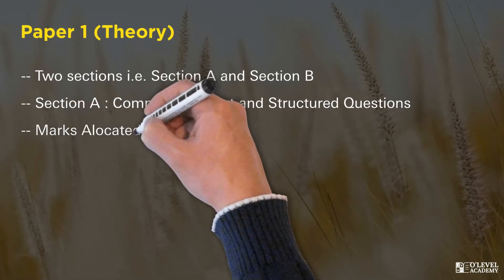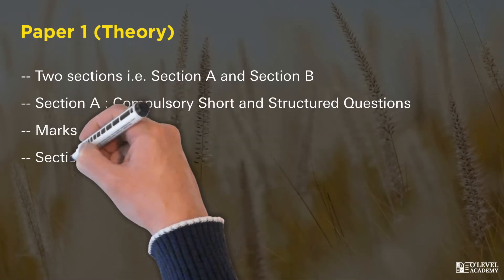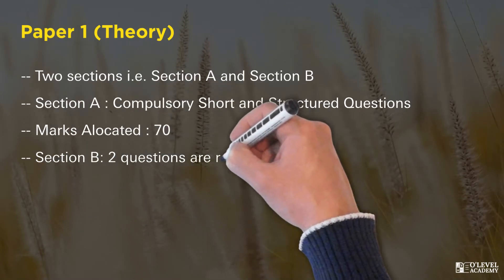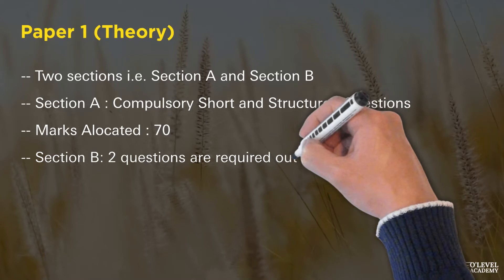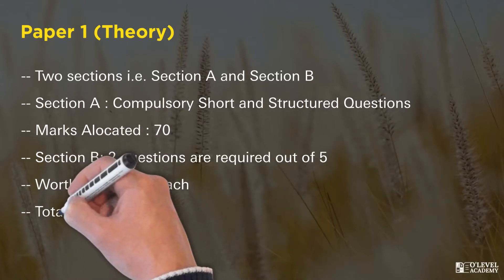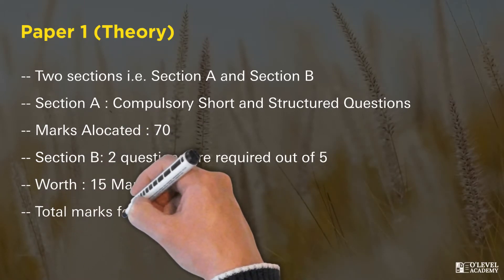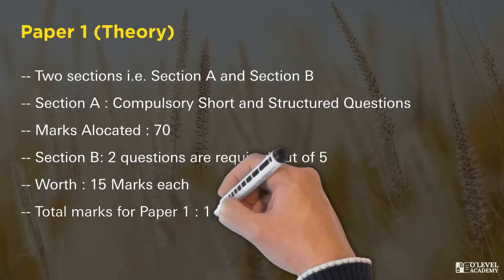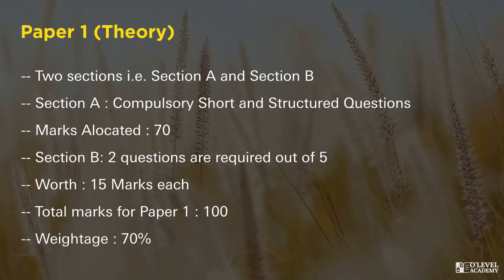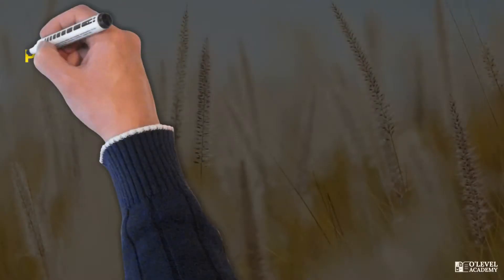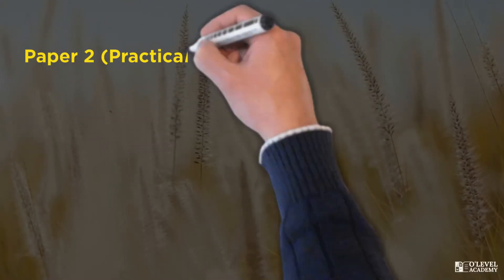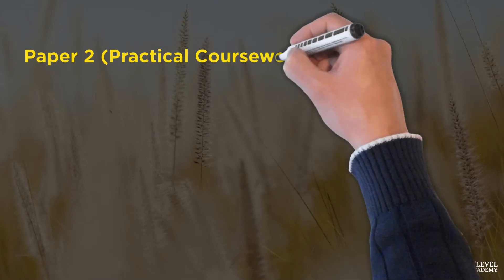In Section B there is a choice to attempt two questions out of five, each worth 15 marks. Total marks for Paper 1 are 100 and the total weightage of this paper is 70%.